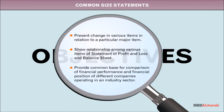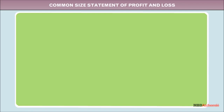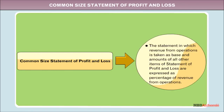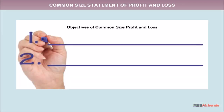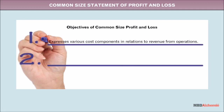The common size statement of profit and loss is a statement in which revenue from operations is taken as the base, and amounts for all other items of the statement of profit and loss are expressed as a percentage of revenue from operations. Its objective is to express various cost components in relation to revenue from operations.